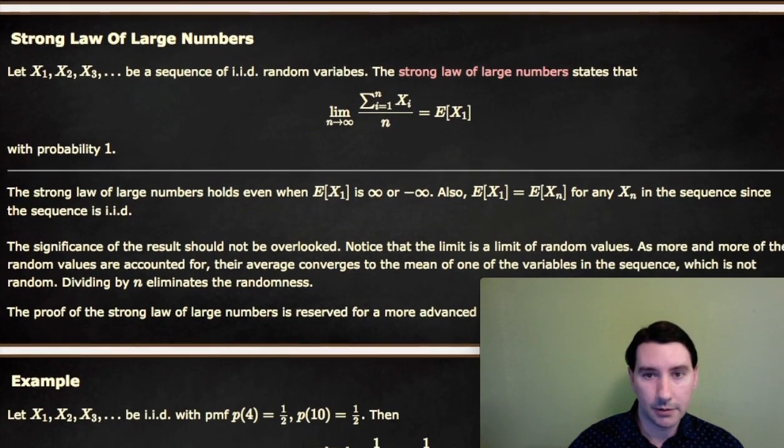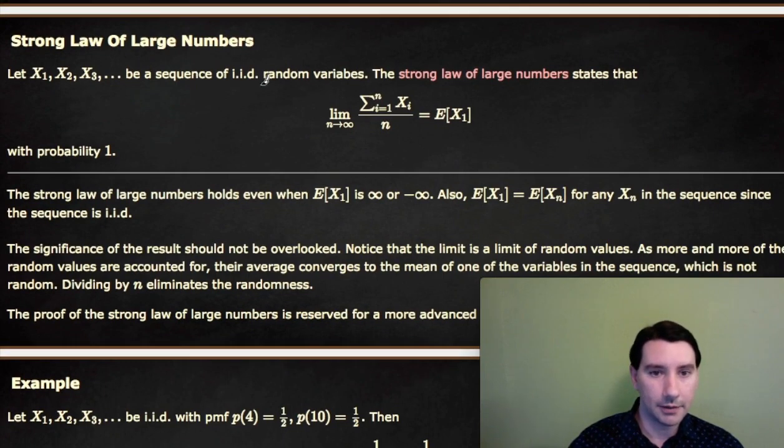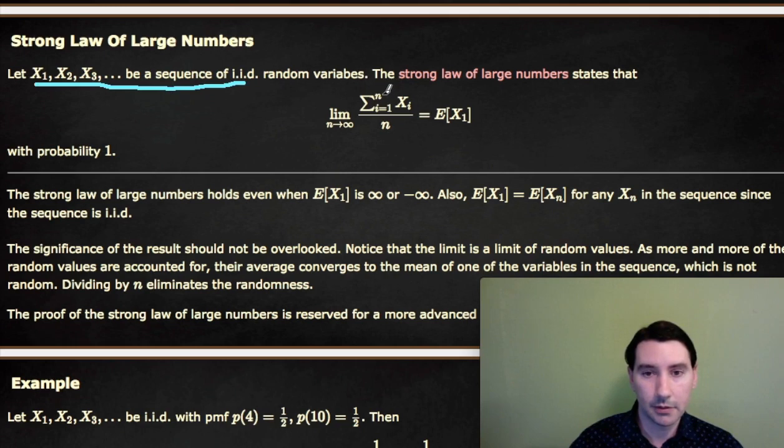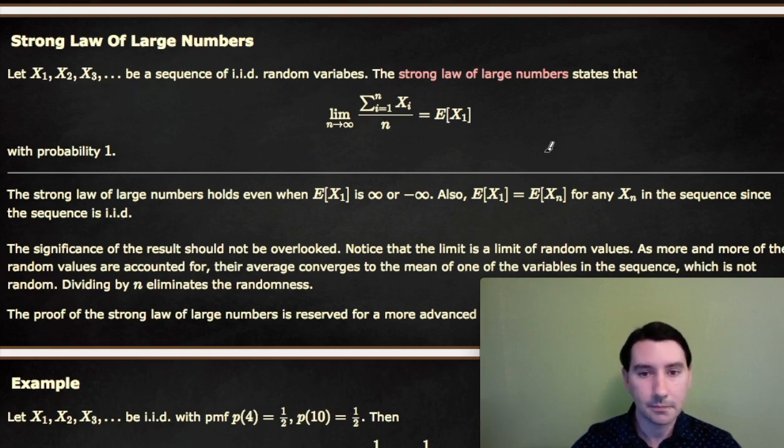The Strong Law of Large Numbers says that if we have a sequence of IID random variables and look at their partial sums, so like the sum from 1 to n of xi over n, then that limit converges to the expected value of any one of the random variables. And that limit converges with probability 1.